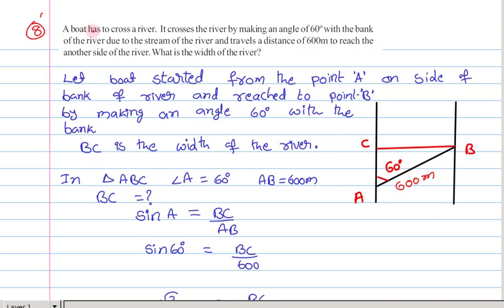Let us observe the question. A boat has to cross the river by making an angle of 60 degrees with the bank of the river. Due to the stream of the river, it travels a distance of 600 meters to reach the other side of the river. Then what is the width of the river?